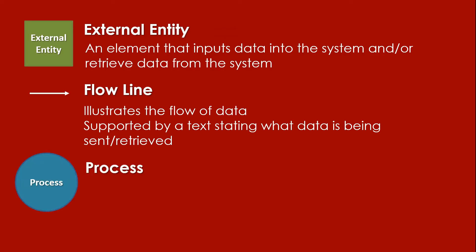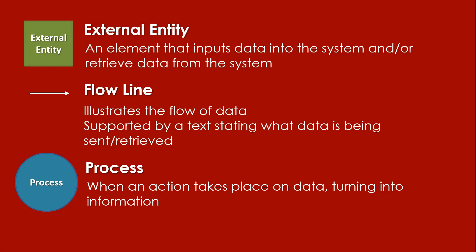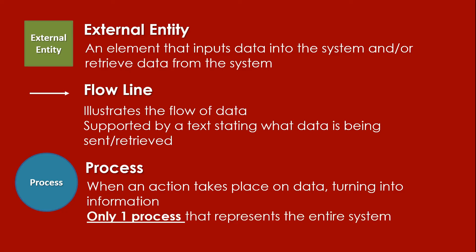Next, we have the process. For the process, the shape being used is a circle. It is when an action takes place on data, turning it into information. In a context diagram, there is only one process which represents the entire system. When we are creating a context diagram, there is only one process that we need to place.